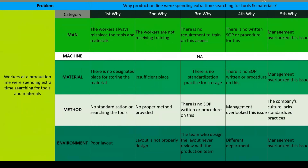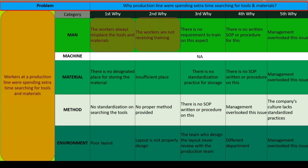Problem: workers at a production line were spending extra time searching for tools and materials. Under Man — First why: why are workers spending extra time searching? Workers always misplace tools and materials. Second why: why do workers misplace? Because they are not receiving training. Third why: why no training? There is no requirement to train on this aspect. Fourth why: why no requirement? There is no written SOP or procedure. Fifth why: why no SOP? Management overlooked this issue.